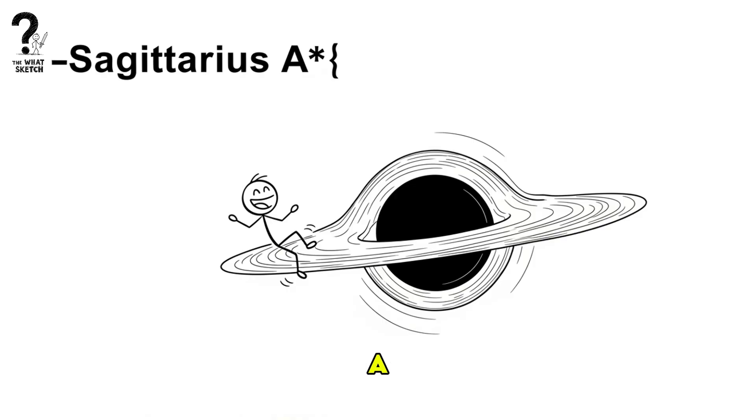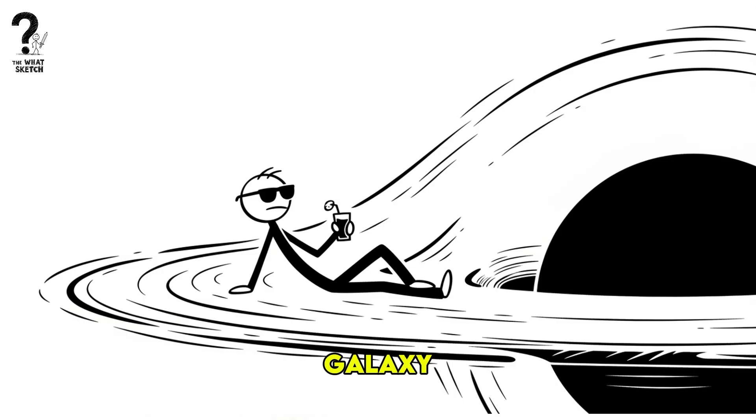To avoid this, you need a giant, a supermassive black hole, like Sagittarius A star at the heart of our galaxy. It's so large that the gravity at its boundary is gentle enough to let you float across unharmed.